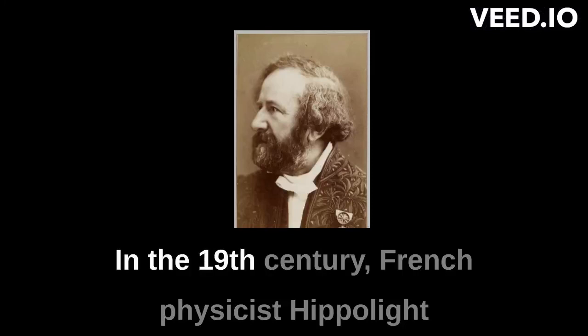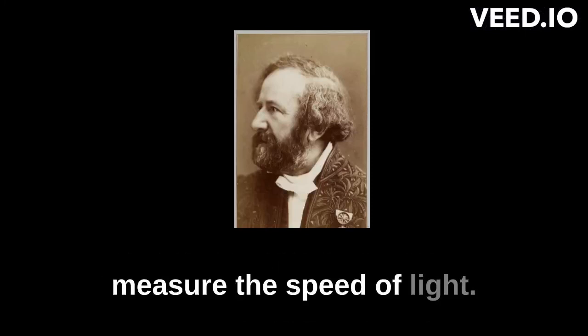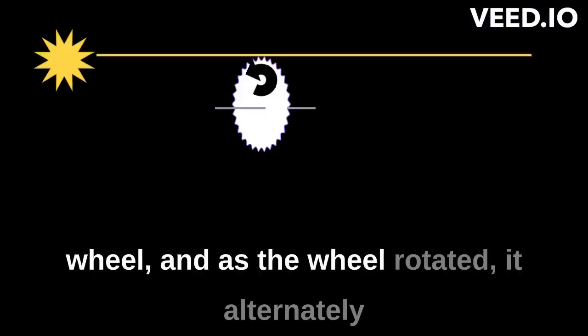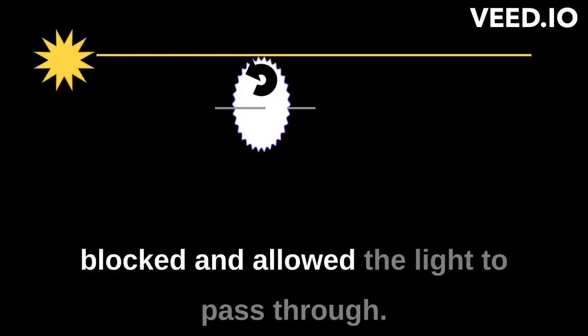Later, in the 19th century, French physicist Hippolyte Fizeau used a rotating toothed wheel to measure the speed of light. A beam of light was directed at the wheel, and as the wheel rotated, it alternately blocked and allowed the light to pass through.